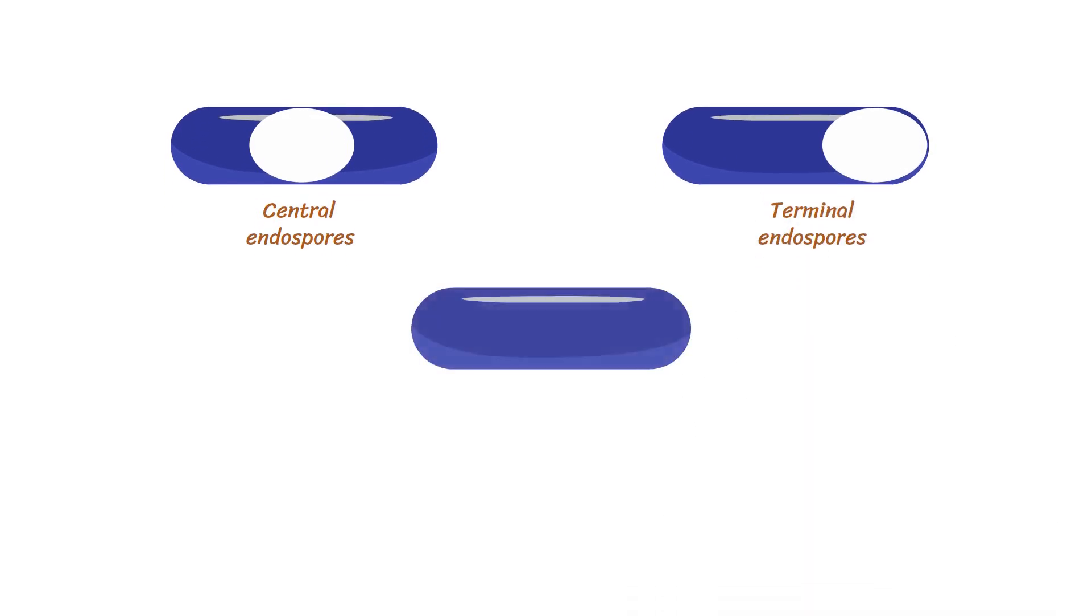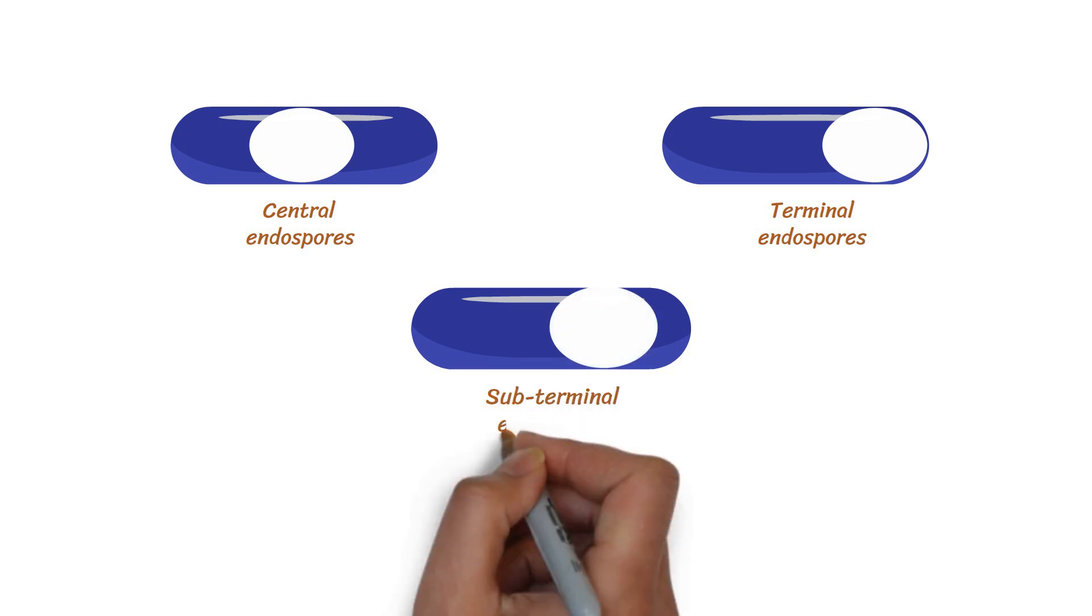Some spores are located between the center and end of the cell. These are called subterminal endospores.